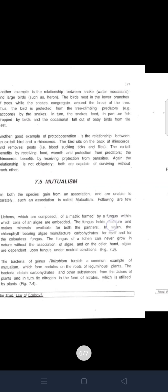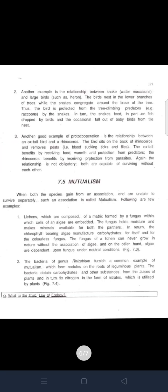Lichen is an example of mutualism where the algae and fungi cannot survive separately — each species gains from the association and is unable to survive without the other. Another example of mutualism is Rhizobium in plant roots: the bacteria obtain carbohydrates and other substances from the plant juices, and in turn fix nitrogen in the form of nitrates, which are utilized by the plants.